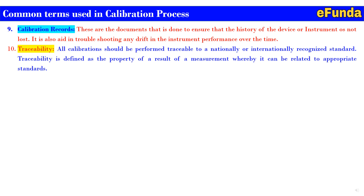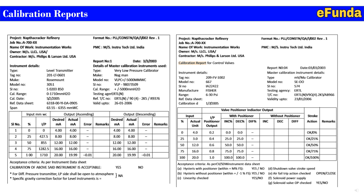Tenth is traceability: all calibrations should be performed traceable to a nationally or internationally recognized standard. Traceability is defined as the property of a measurement result whereby it can be related to an appropriate standard report. On screen, one can see on the left-hand side a calibration report for a level transmitter, and on the right-hand side a calibration report for a control valve. The level transmitter report includes instrument tag number, model number, and related details.